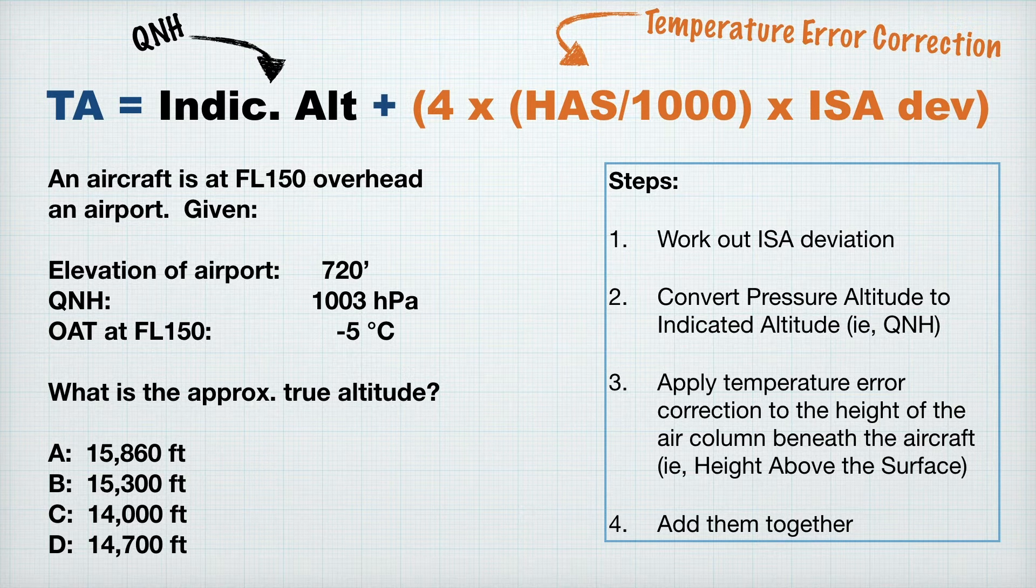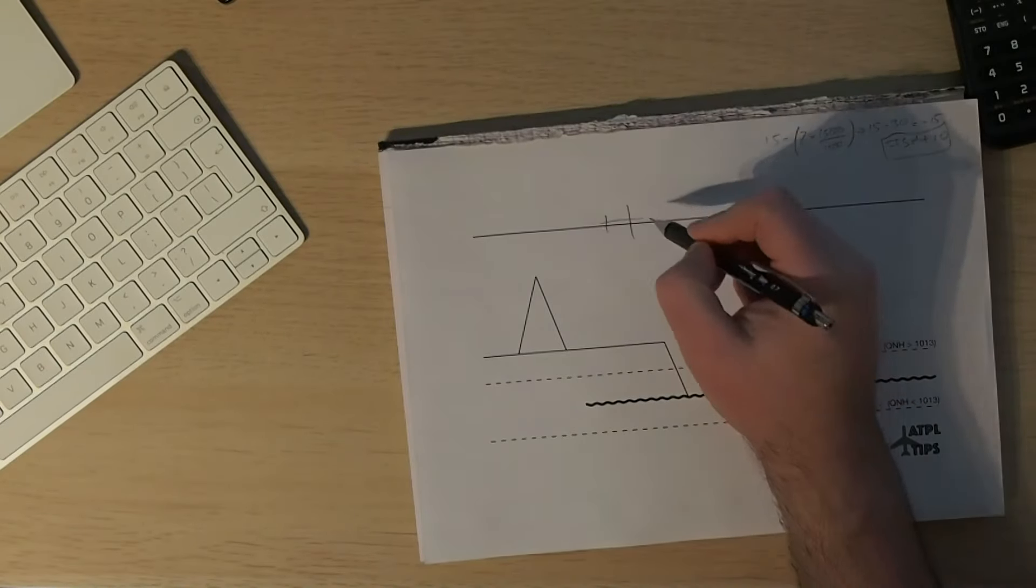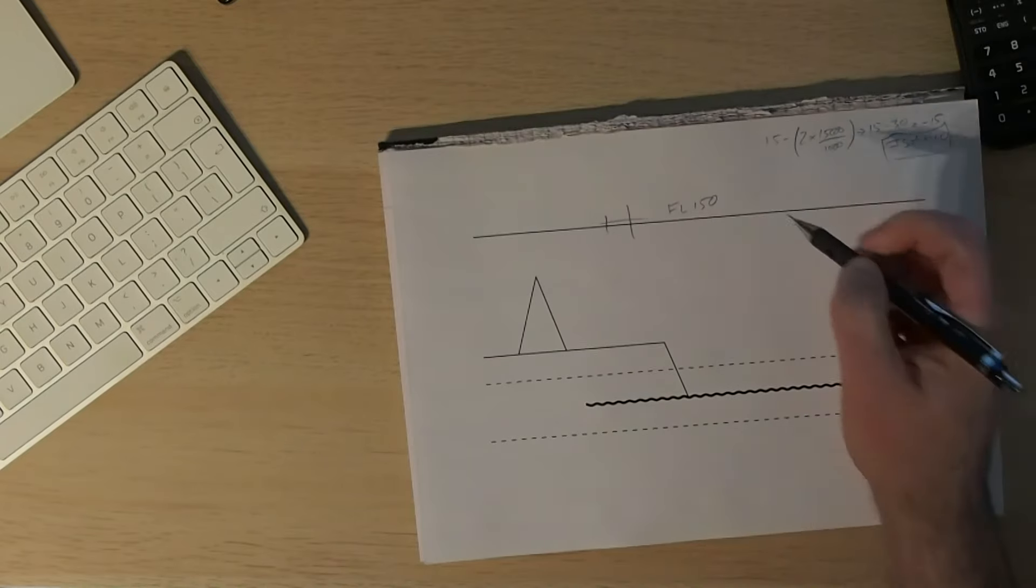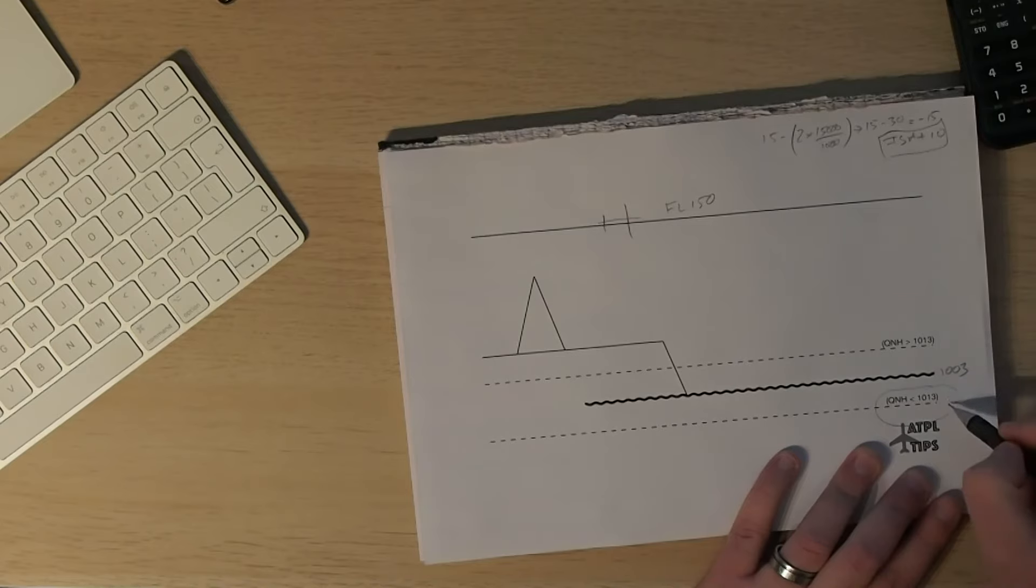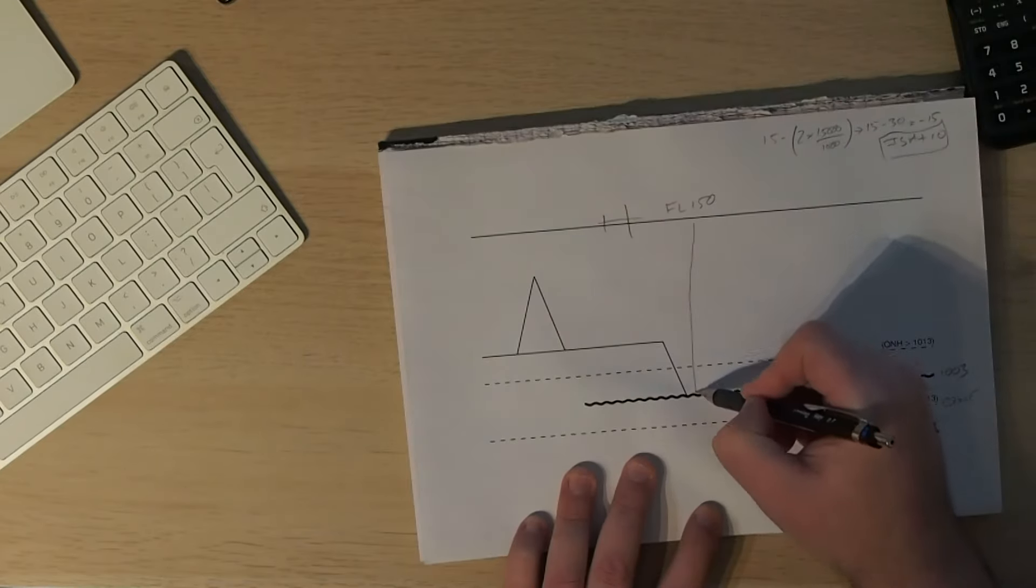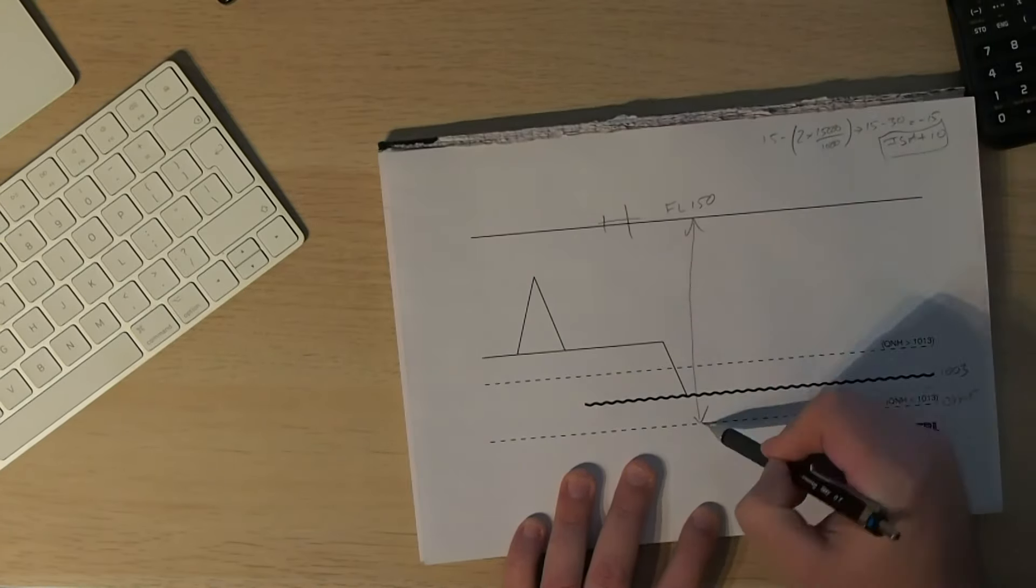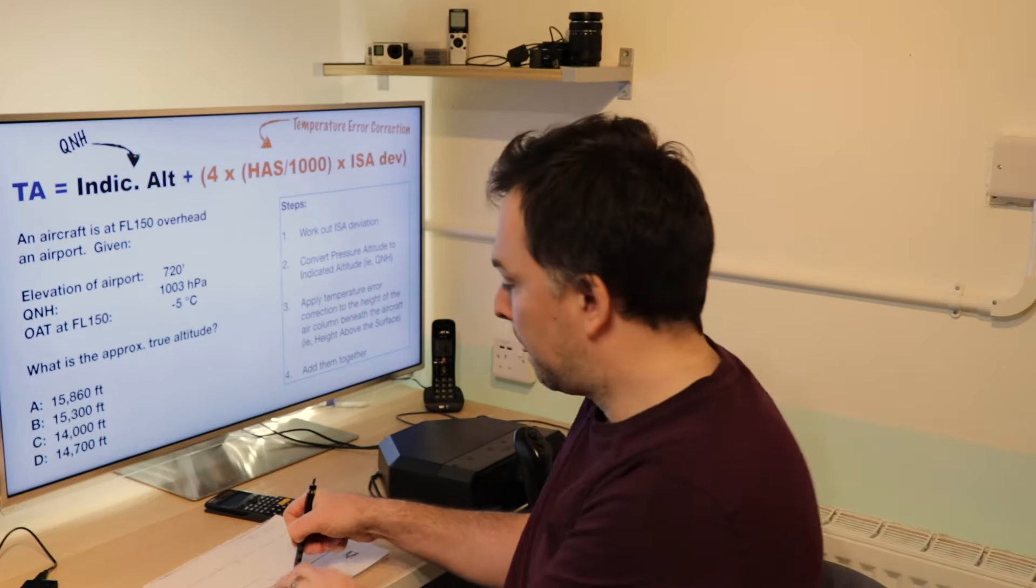Step number two, convert pressure altitude to indicated altitude. Well, here we are over an airfield, and we're at flight level 150. Our QNH is 1003, and because our QNH is less than 1013, our flight level reference, QNE, is below sea level. So this flight level 150 is in relation to a fictitious level below sea level.